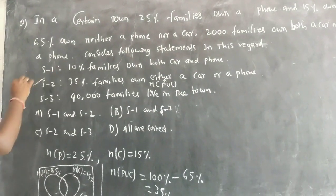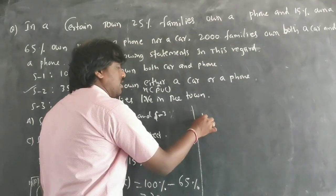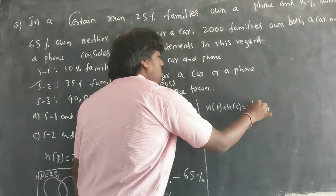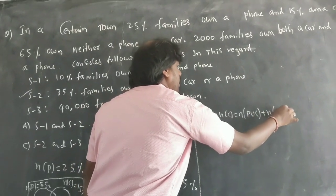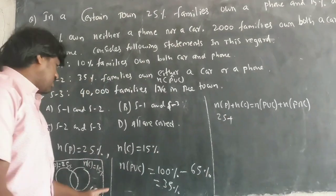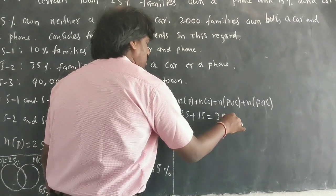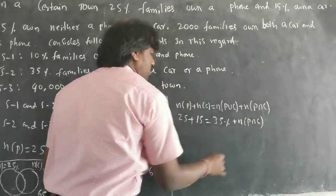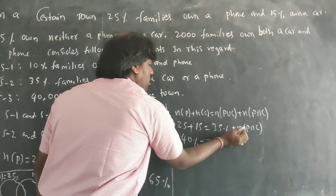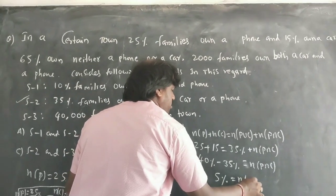S1 asks about those who own both — the intersection. Using the formula: number of phone + number of car = P union C + P intersection C. So 25% + 15% = 35% + P intersection C. That gives 40% − 35% = 5%. So P intersection C = 5%. But S1 says 10%, so S1 is wrong.